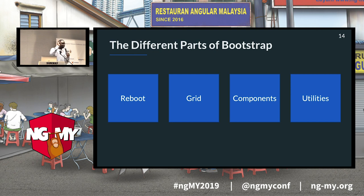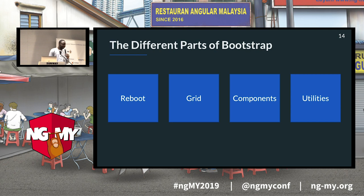Bootstrap has four different parts: Reboot, the Grid, Bootstrap Components, and Bootstrap Utilities. Most developers know the Bootstrap grid and components, but Reboot and Utilities are lesser-known features. We will talk about those today.